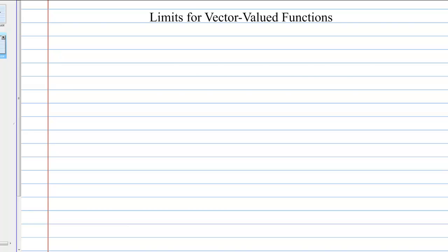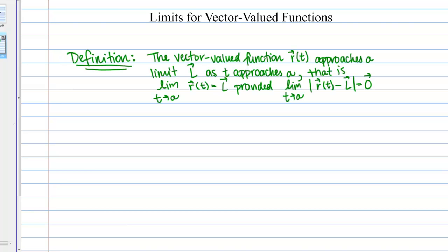Let's start with the definition. This definition states that the vector-valued function R approaches a limit L as T approaches A, that is, the limit as T goes to A of R(T) equals L, provided the limit as T goes to A of the absolute value of R(T) minus L equals 0. Notice these are all vectors: L is a vector, 0 is a vector.